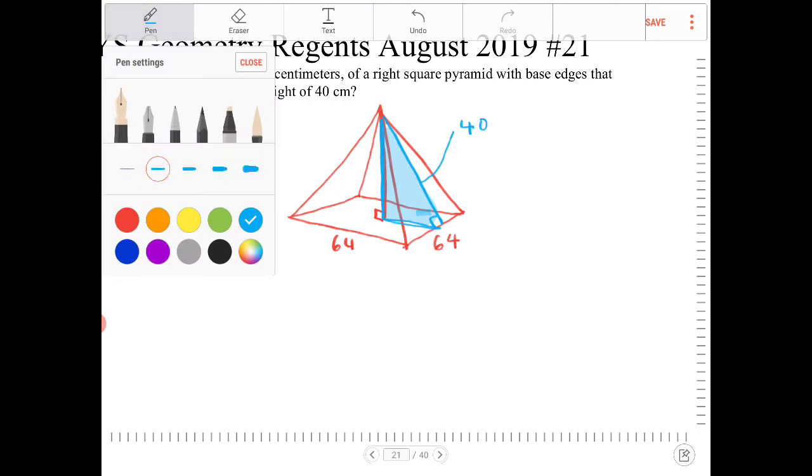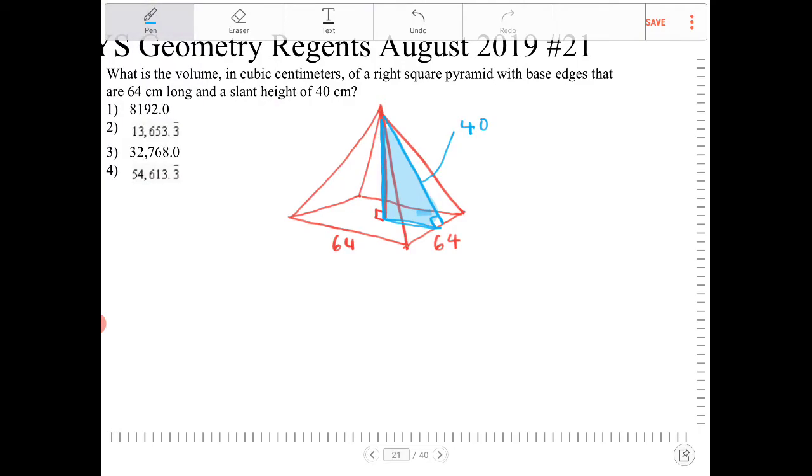The base is going to measure half of 64, right? Because that triangle reaches the middle of the pyramid there. So this is going to be 32.